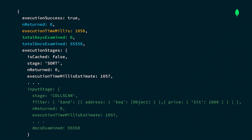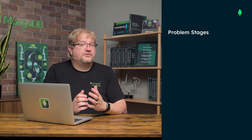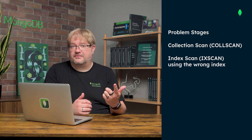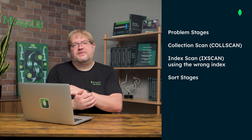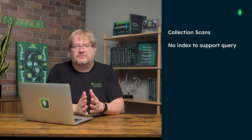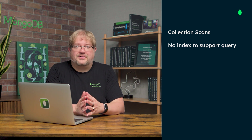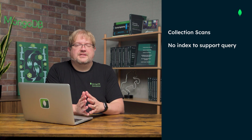Finally, we can see the query stages in the output. MongoDB processes queries in stages representing the various operations performed to retrieve data. Here, we see a collection scan, where the database reads the entire collection to find matching documents. Costly stages include collection scans, index scans using the wrong index, and sort stages. Collection scans happen when there is no index to support the query, forcing MongoDB to scan the entire collection — particularly problematic for large datasets. Adding an appropriate index is key to improving performance.